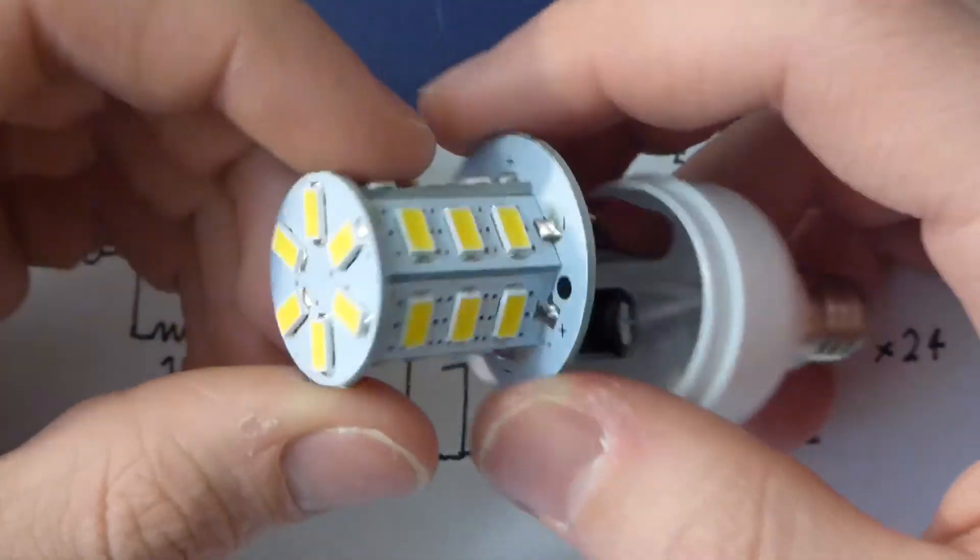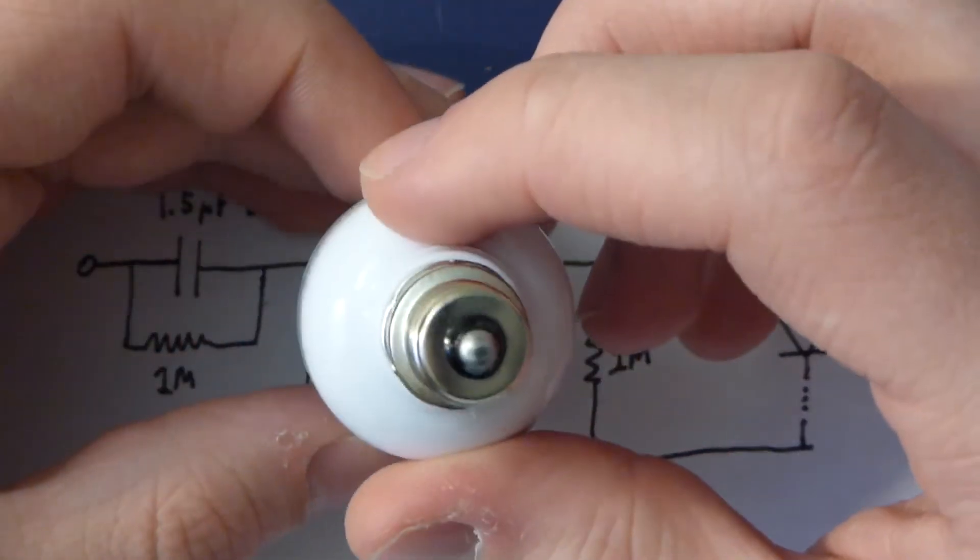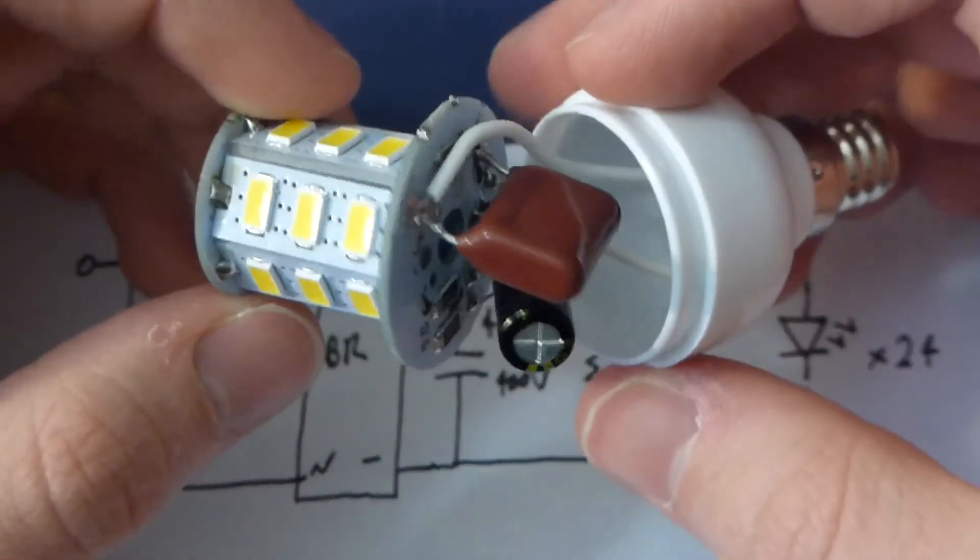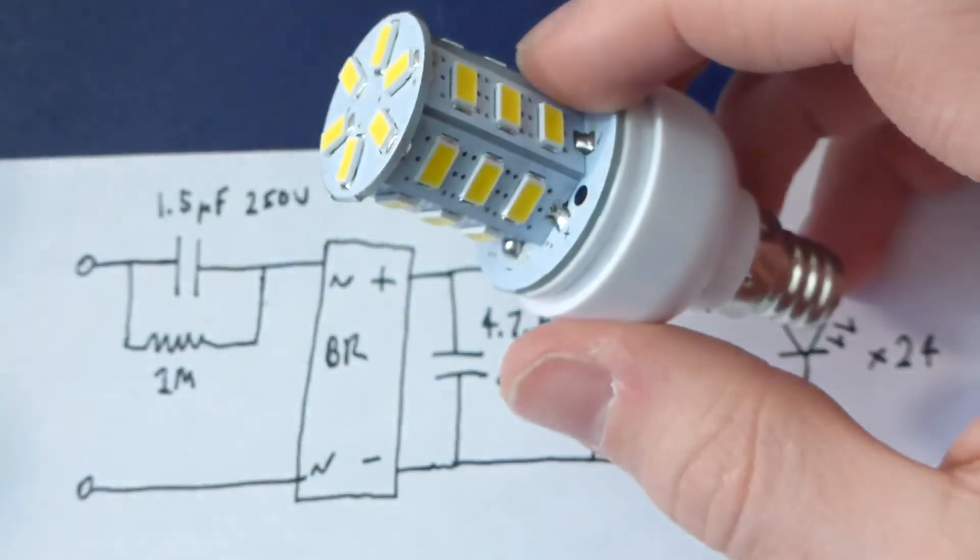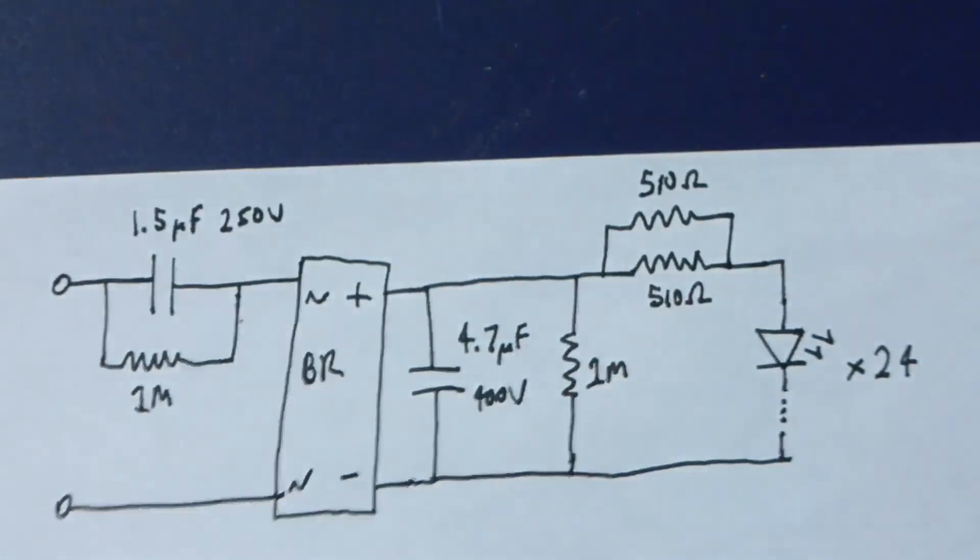Just thought I'd show you the inside of a smaller light, an E12 base, because most of the stuff I see on YouTube is just all the E27 base bulbs. So this is just a look inside something a little different. Hopefully that was useful. Thanks for watching.